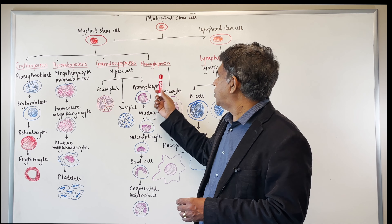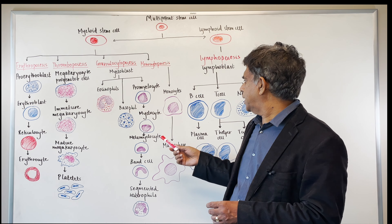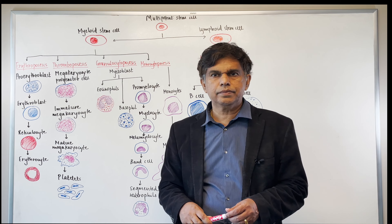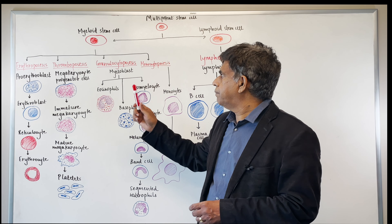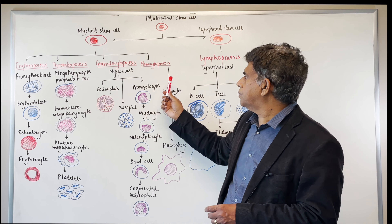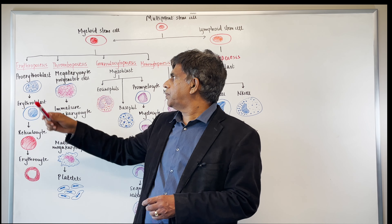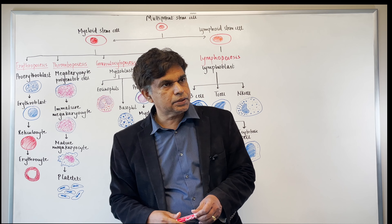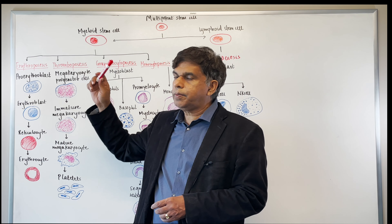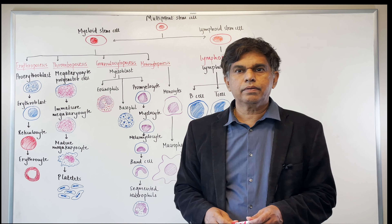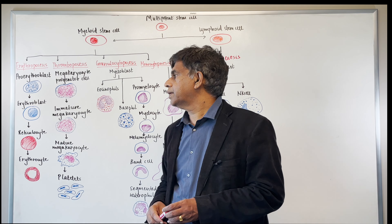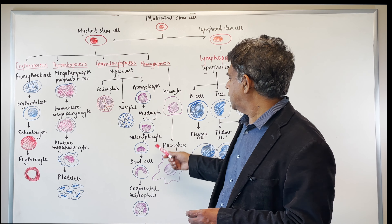In monocytopoiesis, you have monocytes that turn into macrophages. To recap: erythropoiesis is stimulated by erythropoietin from the kidneys. For thrombopoiesis, the stimulant is thrombopoietin, which is produced in the liver.